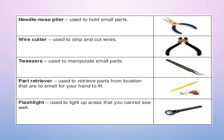The wire cutter is used to strip and cut wires. It is an edge tool for cutting wire, also known as diagonal pliers, intended for the cutting of wire. Tweezers are used to manipulate small parts. These are small tools used for picking up objects too small to be easily handled with human fingers, most likely derived from tongs, pincers, or scissors-like pliers used to grab or hold hot objects.